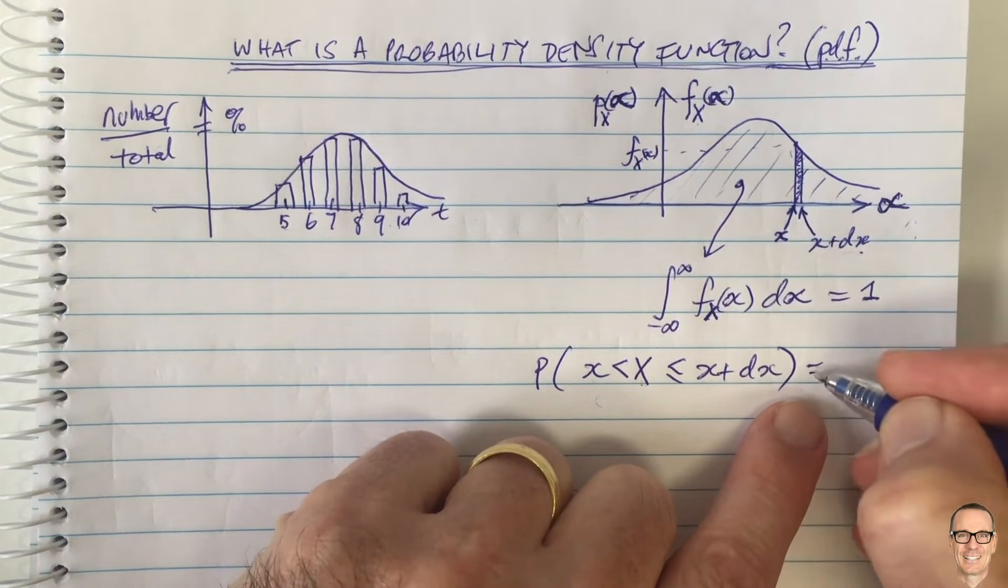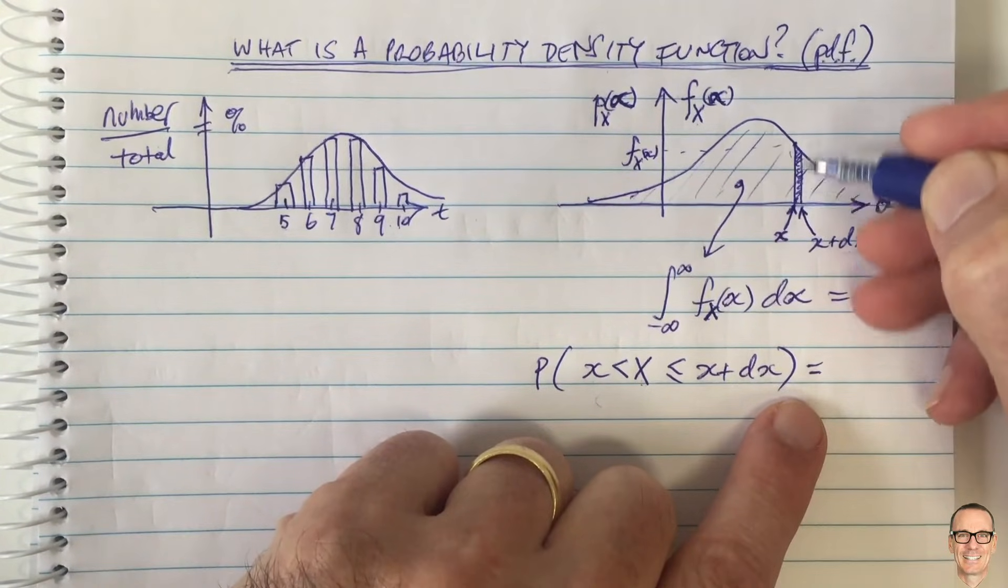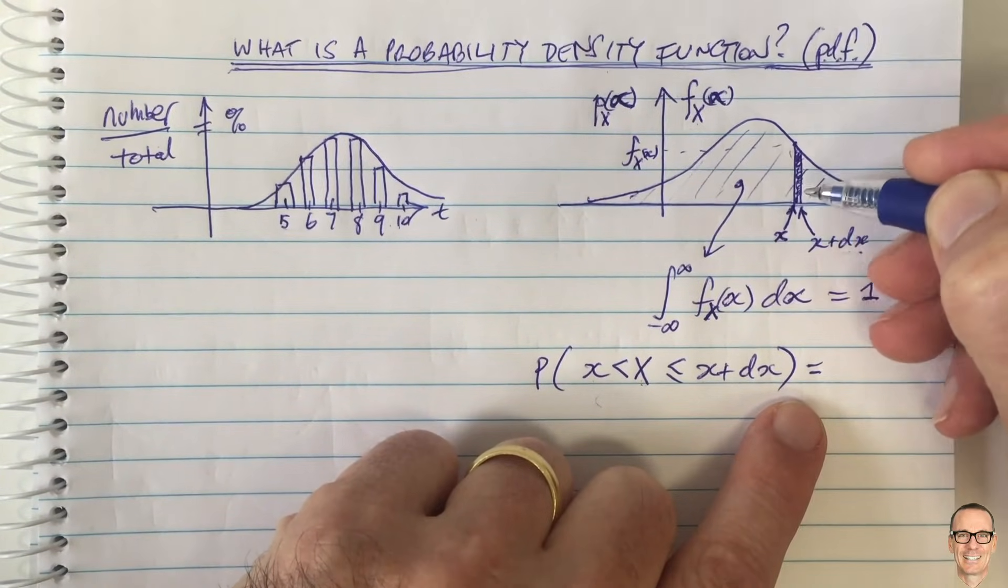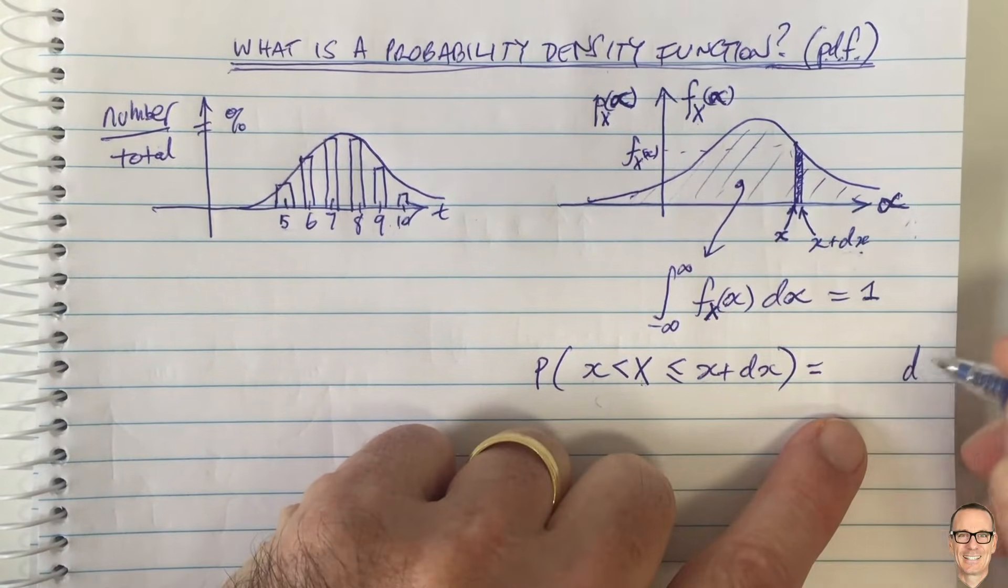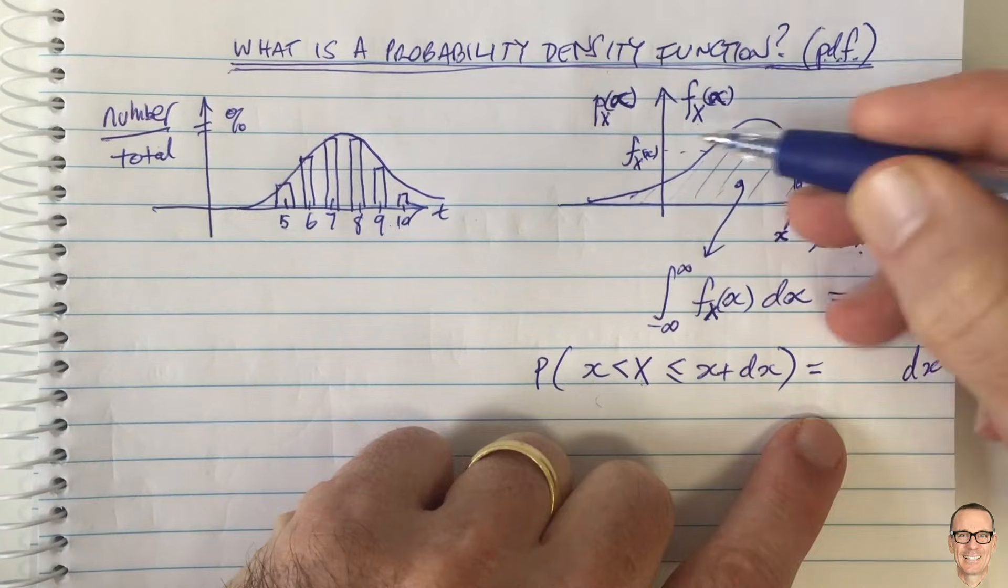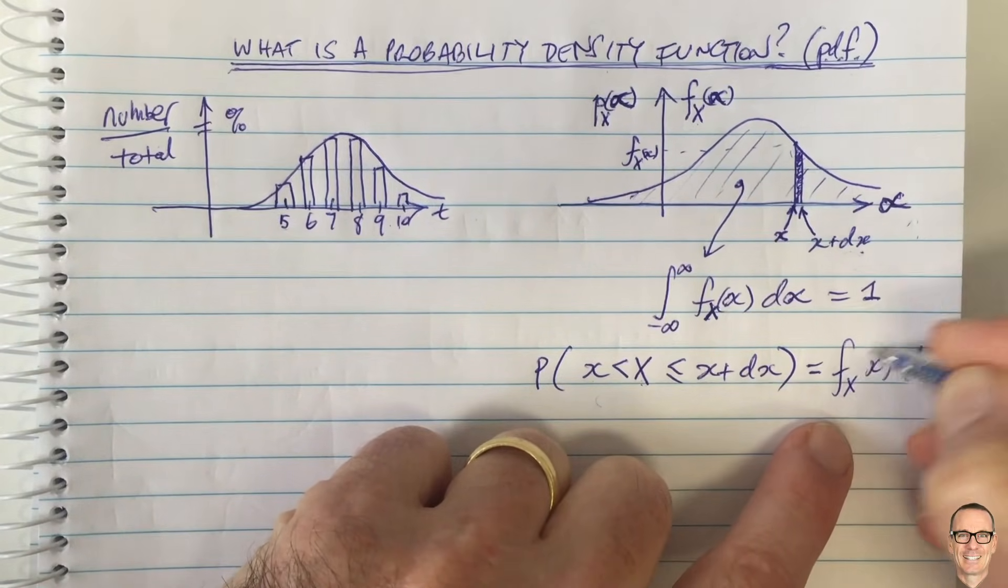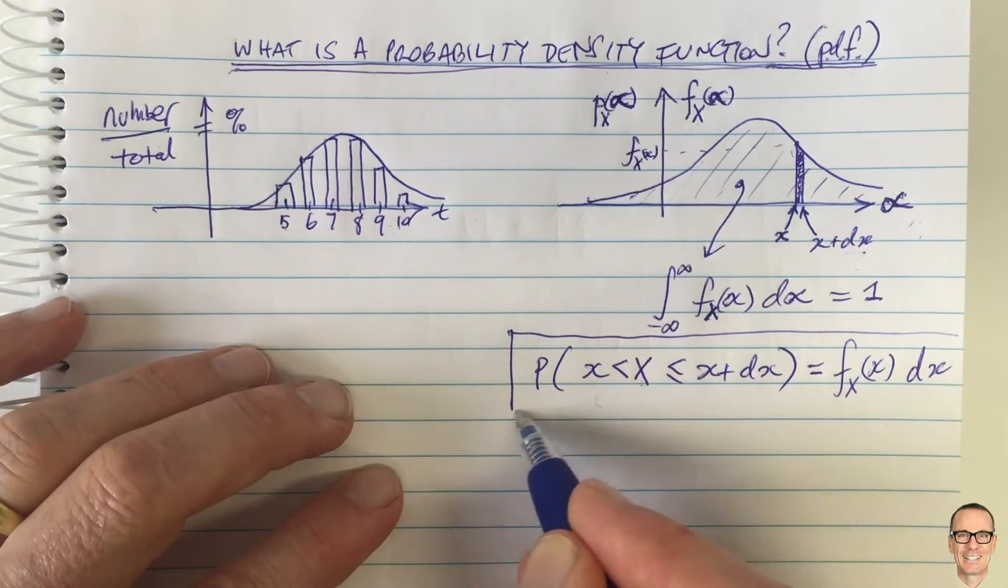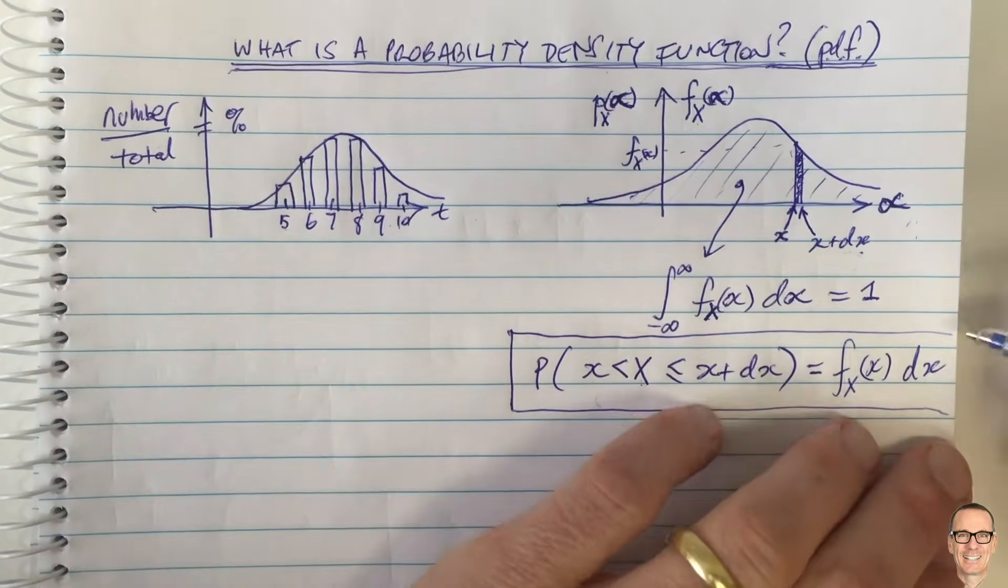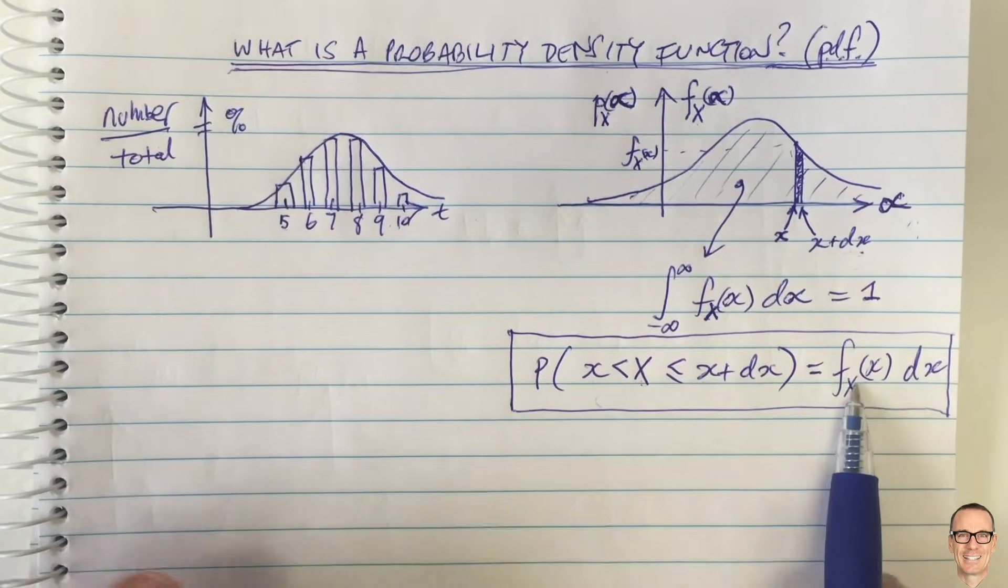Then that equals the area of this shaded area that I've drawn. So it equals the distance along the bottom, the distance along the bottom is dx, times the height, and the height was f_X(x).